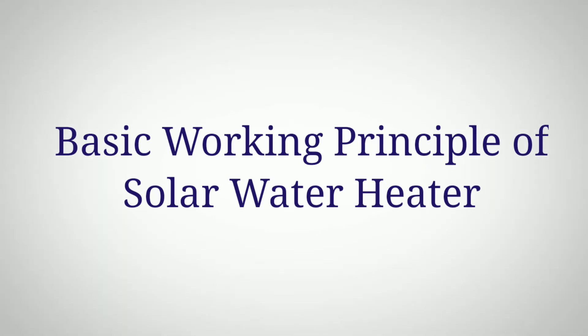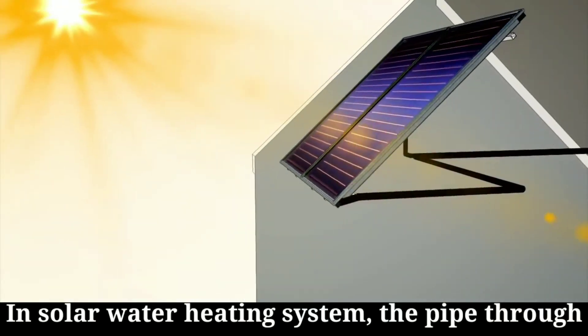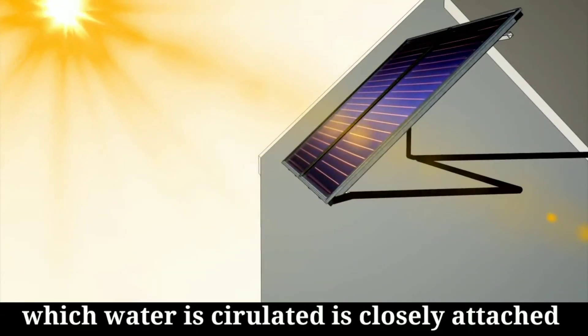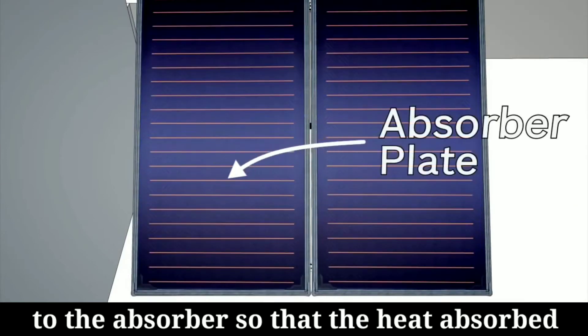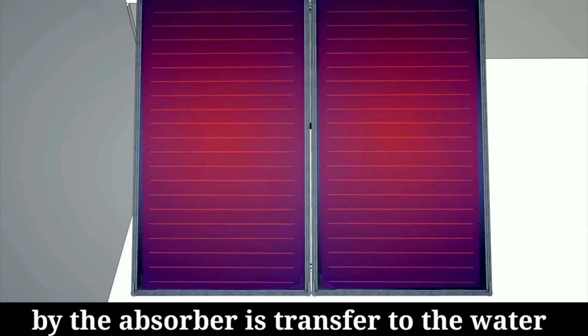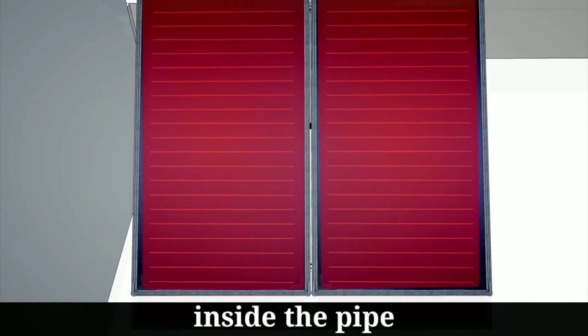Basic working principle of solar water heater: In solar water heating systems, the pipes through which water circulates are closely attached to the absorbers, so that heat absorbed by the absorber is transferred to the water inside the pipe.